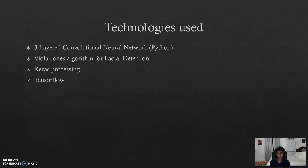For the technology used, we made the best out of freely available tools and frameworks to create our system. Namely, a three-layered convolutional neural network that we wrote using Python. And for the facial detection, which is part of our pre-processing, we used the Viola-Jones algorithm, again written in Python, which is freeware. And for the processing, we used a combination of Keras and TensorFlow to train and test our system.